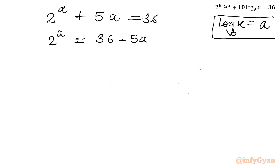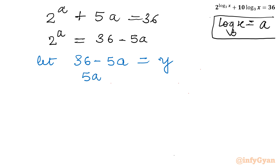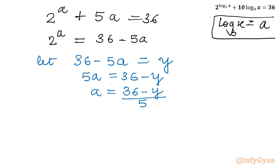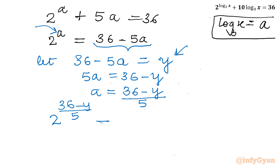Now I will use a second substitution. Let 36 minus 5a equal to y. From here I can calculate a: 5a equals 36 minus y, or a equals (36 minus y) divided by 5. Putting this in, 2^a becomes 2^((36−y)/5), and the right-hand side is y.